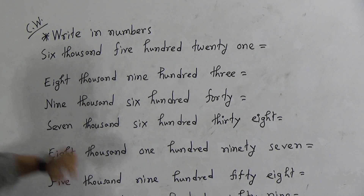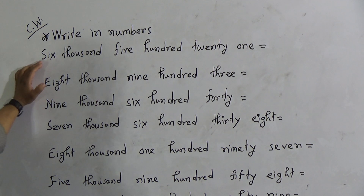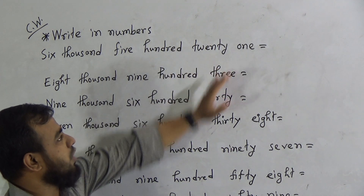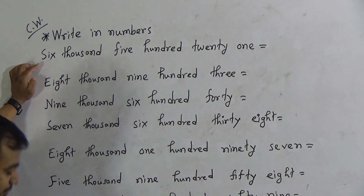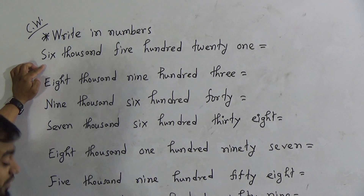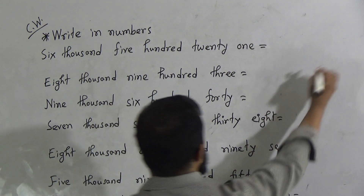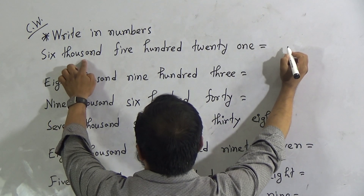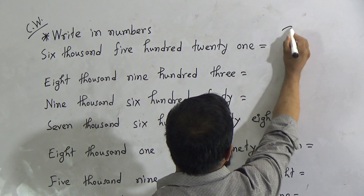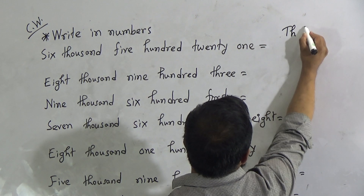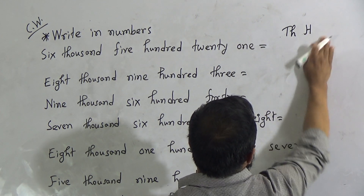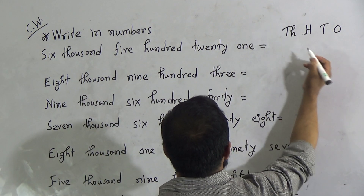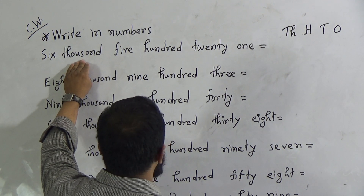You must also write down the date in the top right corner. Now, the first number is 6521. To write down any number correctly, we need to write down the place values first — then there will be no mistakes. We need to write down up to the thousands place. So: Thousands (Th), Hundreds (H), Tens (T), and Ones (O). Because the highest position here is thousands.